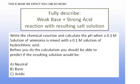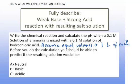Write the chemical reaction and calculate the pH when a 0.1 molar solution of ammonia is mixed with a 0.1 molar solution of hydrochloric acid. We're going to assume that we mix equal volumes — let's say we're mixing one liter of each to make the calculations easier. Before we actually do the calculation, you ought to be able to predict whether the resulting solution should be neutral, basic, or acidic.